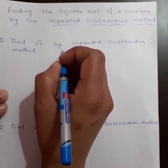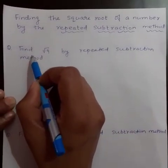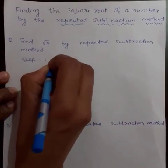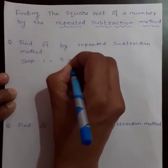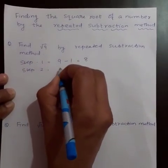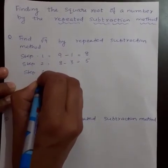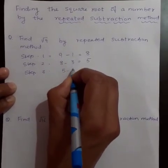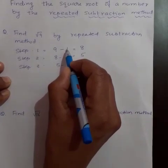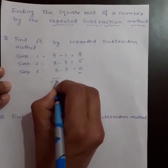Let us study how to find the square root of a number by repeated subtraction method. Find square root of 9 by repeated subtraction method. We have to subtract odd numbers from 9. That is: 9 minus 1 equals 8 (step 1); 8 minus 3, the second odd number, equals 5 (step 2); 5 minus 5, the next odd number, equals 0 (step 3). We have subtracted the successive odd numbers 1, 3, and 5, and obtained 0 in step 3. Therefore, square root of 9 is equal to 3.